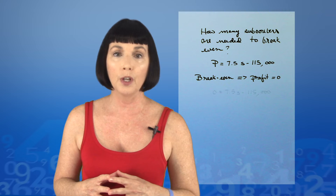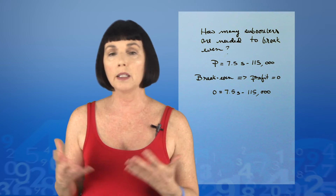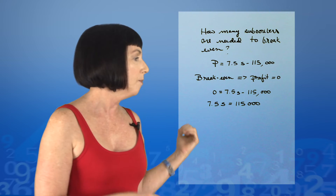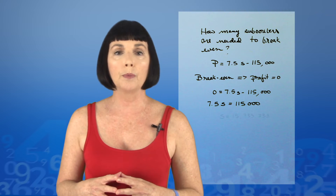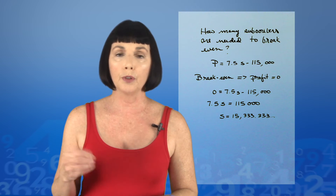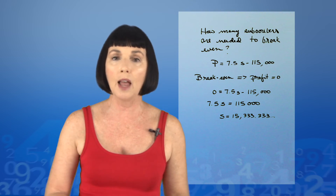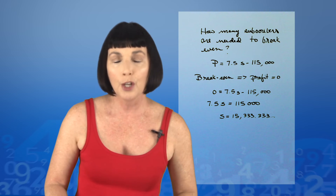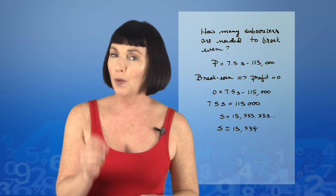We set p equal to 0 and solve. So 0 equals 7.5s minus 115,000, or 7.5s equals 115,000. When we do that arithmetic, we get s equals 15,333.333... Now we're talking about subscribers, so we're not going to have a fractional person. The number of subscribers needed to break even will be 15,334.